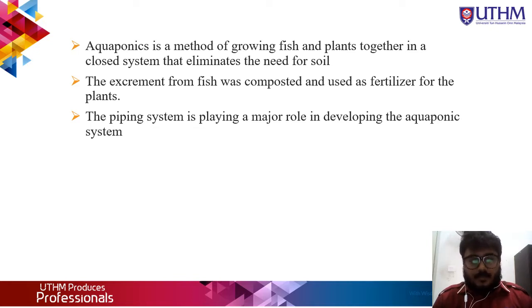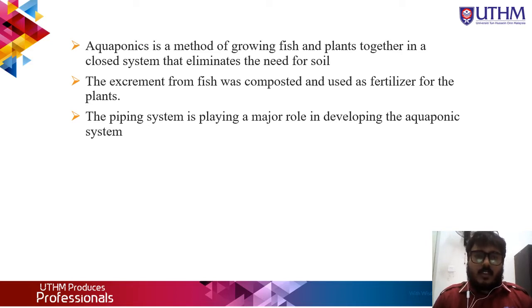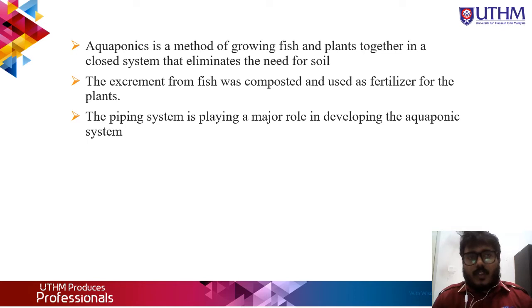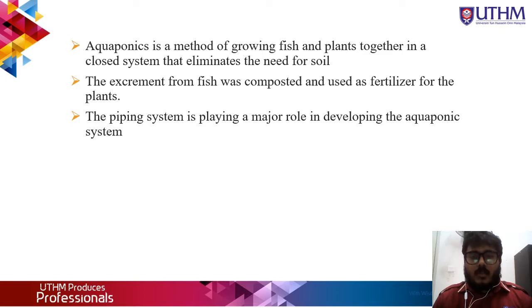The fish waste is used as fertilizer for the plants. In the aquaponics system, piping plays a major role. Without piping, we cannot do anything to make the aquaponics system work, because piping is primarily used for the water flow — to grow the plants and to deliver nutrients to the fish.